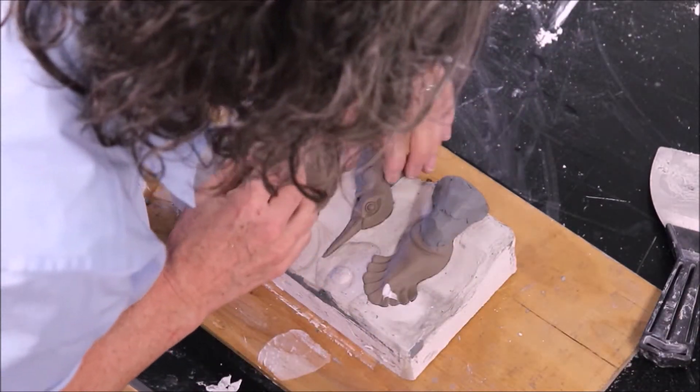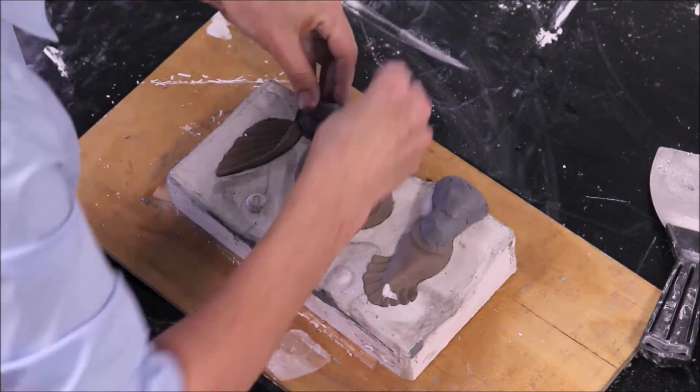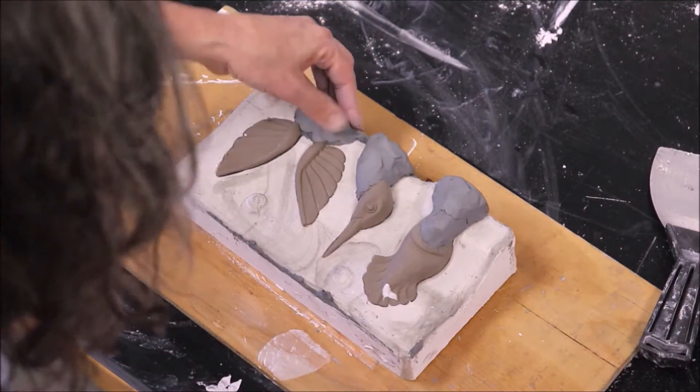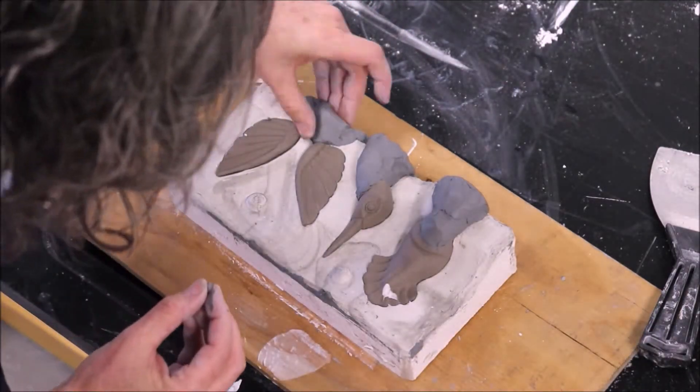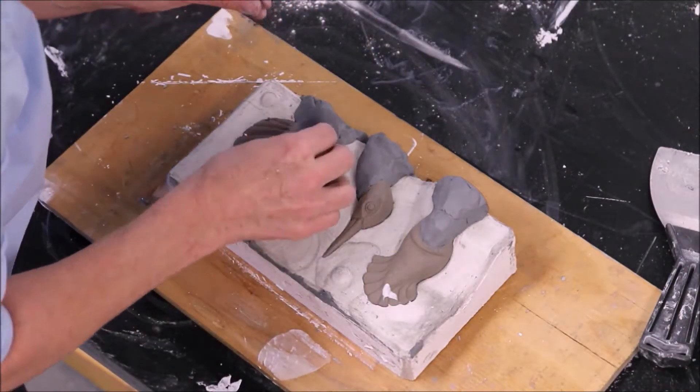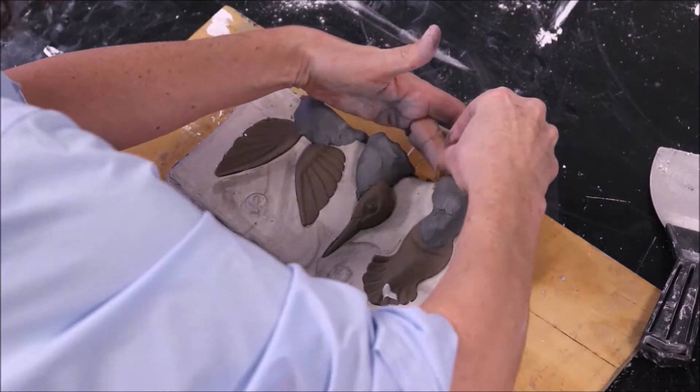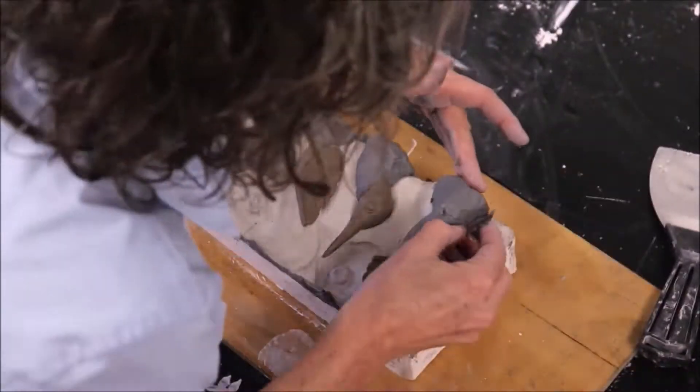So you would want to open the mold once it just starts to cool down, you would cast your other side and wait for that other side to just start to cool down and then open it so that you can remove the object before it fully expands and really grabs a hold of that object inside the mold. And so it will make it a lot easier to take it out.